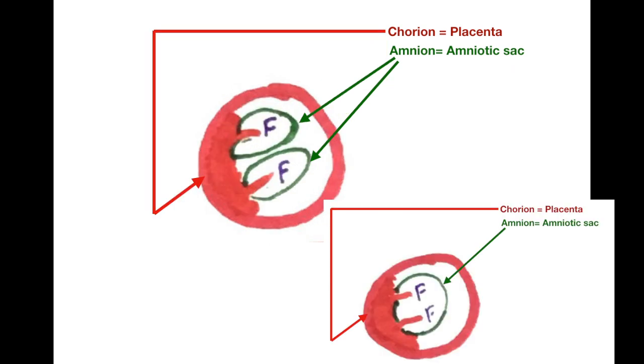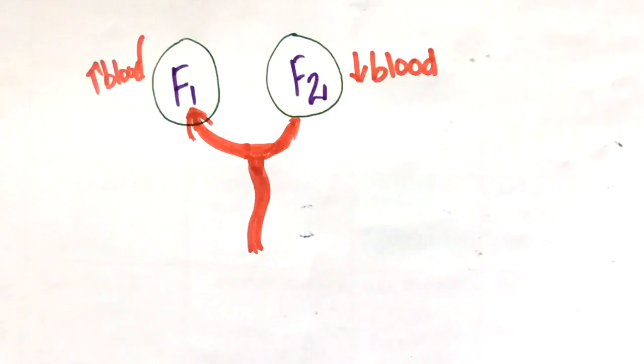In monochorionic pregnancies, the twins share a placenta. So, a poor distribution of blood due to anastomosis can result in the shunting of blood from one baby to another.